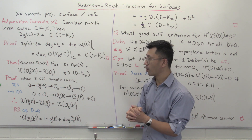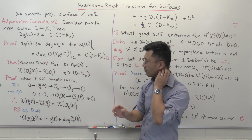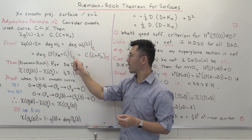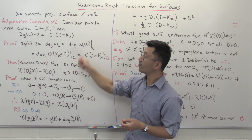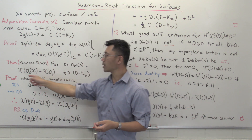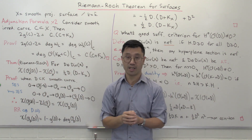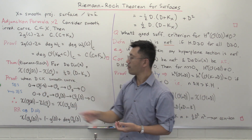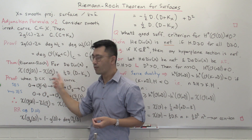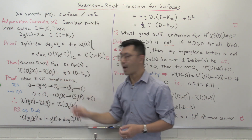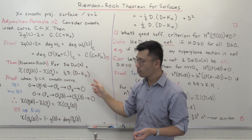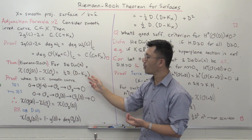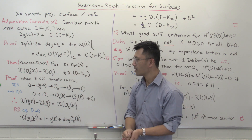What is the Riemann-Roch theorem for surfaces about? For curves, you look at the difference chi(O_D) minus chi(O), which equals the degree of D. Now X is a surface, so we can still look at chi(O_D) minus chi(O). This is now a function of D, but it's more complicated — it's no longer the degree of D. Instead, it's given by this intersection number: it's half of D·(D minus K_X). You should think of this as a quadratic function in D.